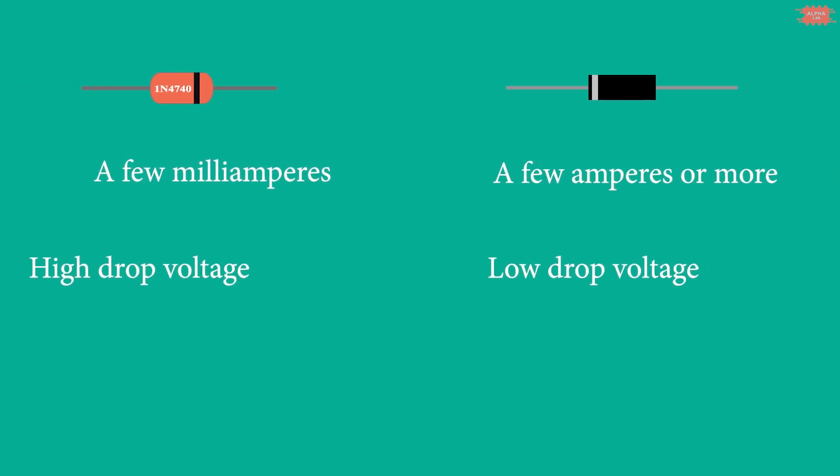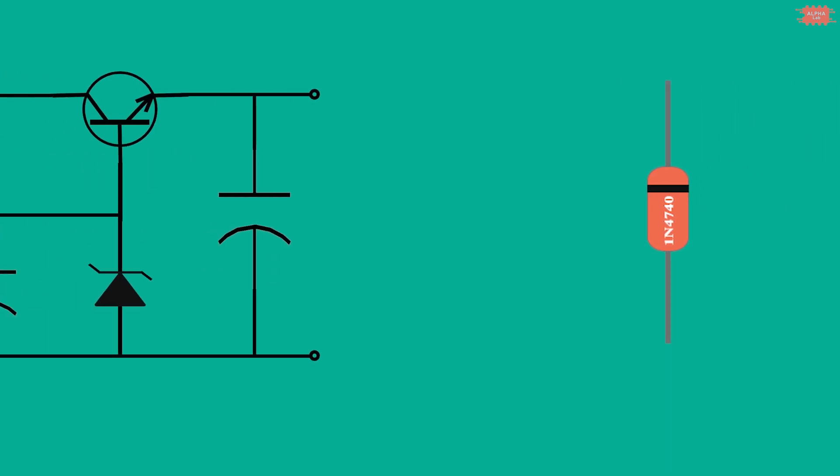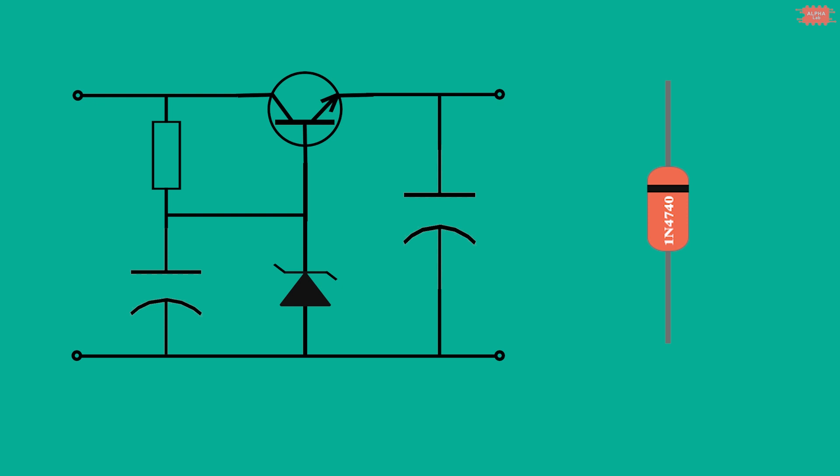In reality, a zener diode is able to carry a lesser amount of current than a regular diode. It is often used to design clamp voltage circuits or combined with transistors to design regulator voltage circuits or for another purpose. We will see them in another video.